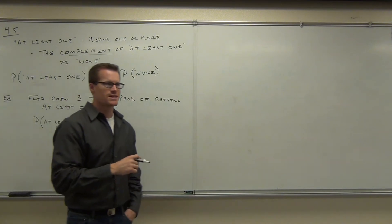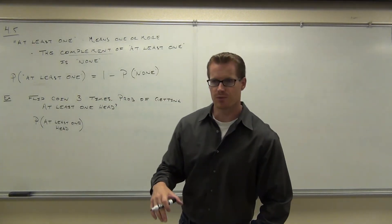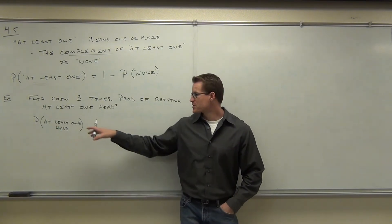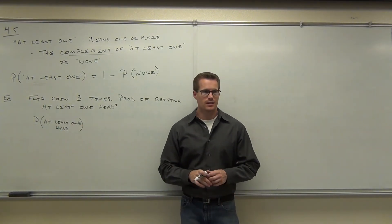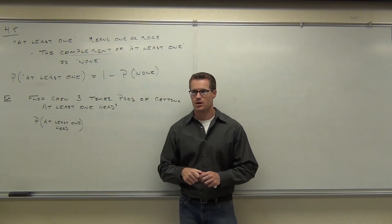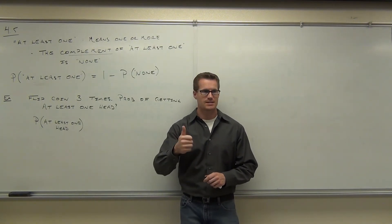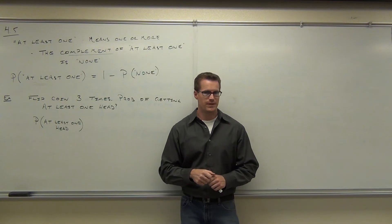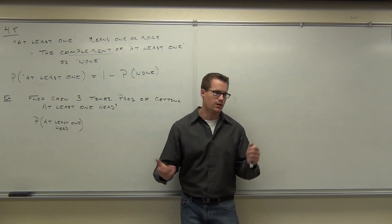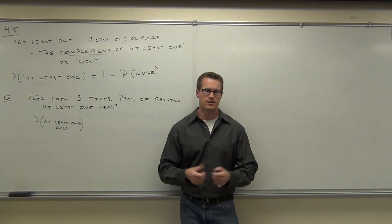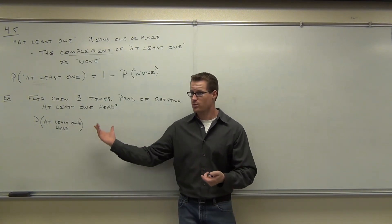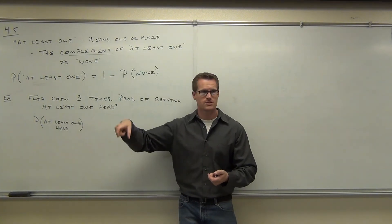I want you to notice this is different than any probability we've dealt with yet. Because when you think about this, what's going to satisfy 'at least one head' when you flip a coin three times? Would flipping heads, heads, heads do it? Yes — that's at least one. How about head, tail, tail? That's at least one. How about head, tail, head? At least one. So as long as there's one or more heads, that satisfies this. That's a whole lot of work.